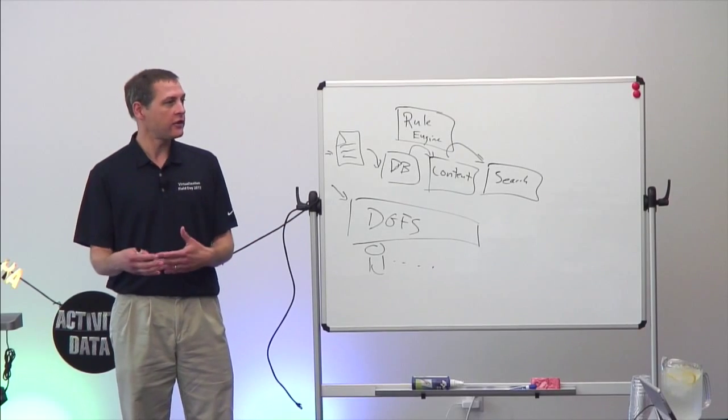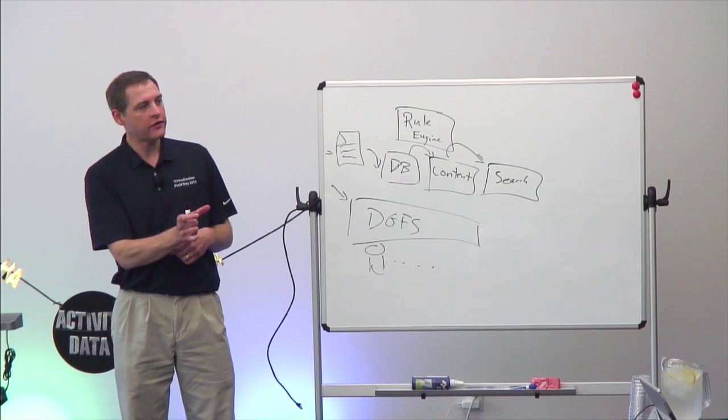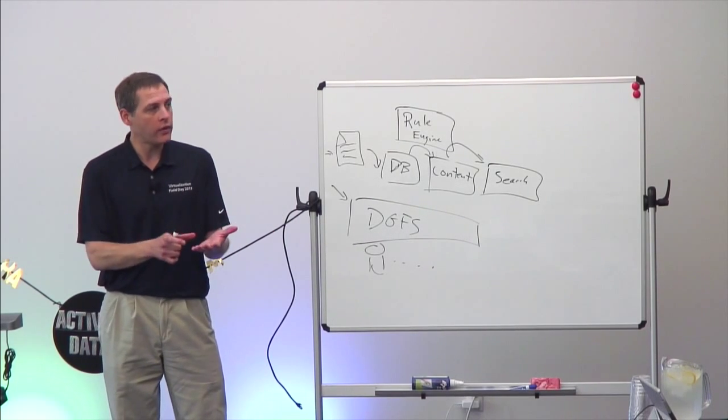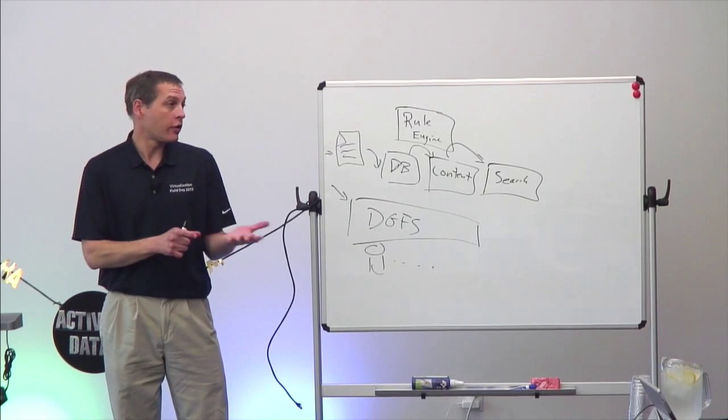For file type detection, we look at approximately the first 4KB of the file, because people who want to hide their MP3s know the trick of putting binary data at the start of the file. A lot of other products only look at the file extension, which is not terribly useful. We actually go in and look at the header of the file and based on the data there determine what processing to do.